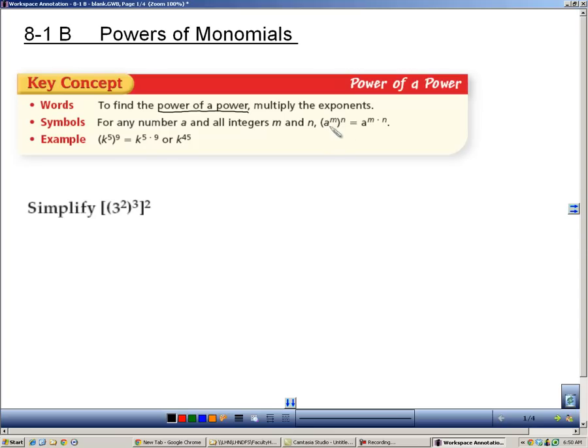Here's what it looks like. When you have a base to some power, call it m, and you take that to another power, then you end up multiplying m and n in this case. Another example, k to the 5th to the 9th is k to the 45th, because you multiply 5 times 9. So let's see some other examples.